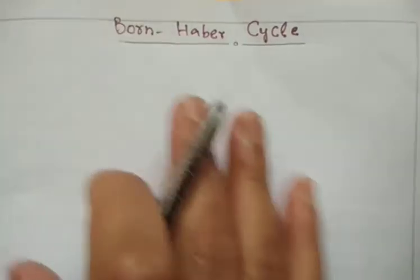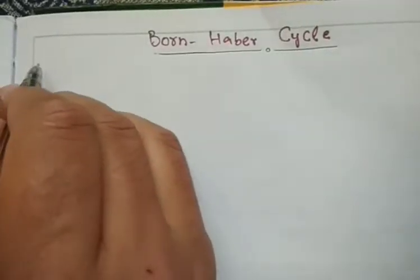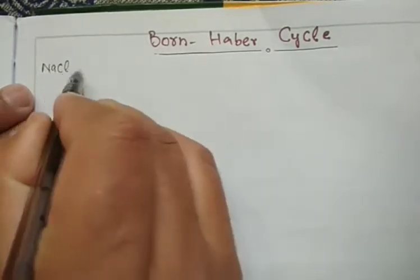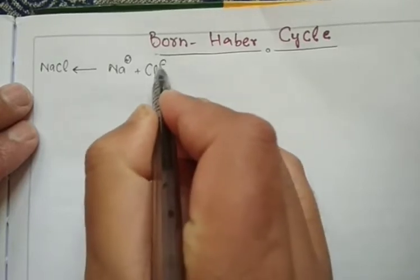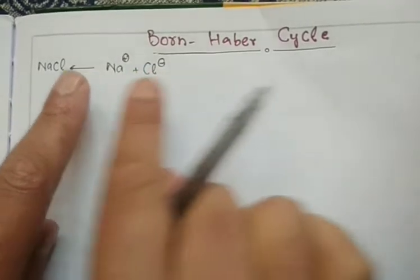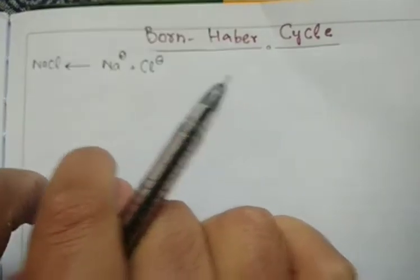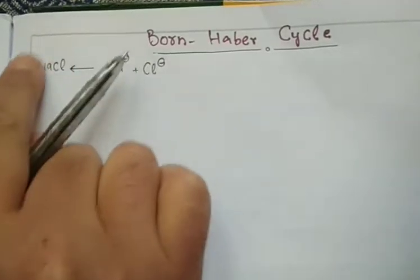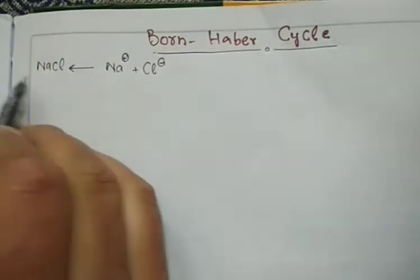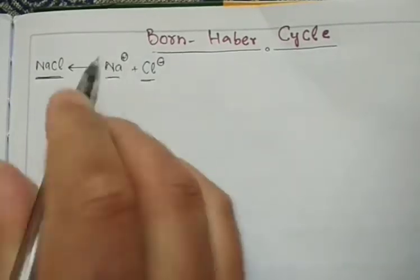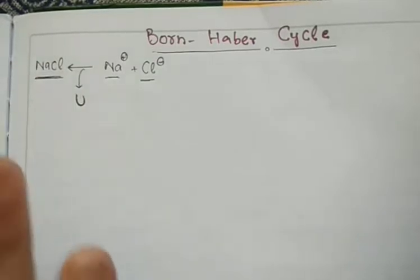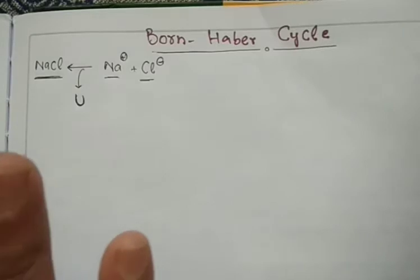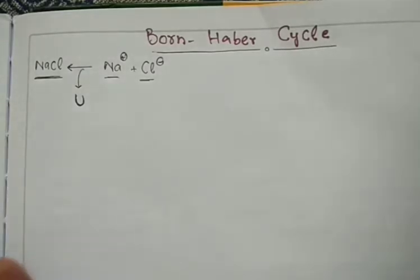So what actually is the Born-Haber Cycle? Last class we studied the formation of ionic substances or ionic compounds. We saw the example of the formation of sodium chloride from the cation sodium plus and the anion chloride. When the cation and anion come closer and form a bond, that is called the ionic bond, resulting in the formation of sodium chloride. When there is formation of one mole of this ionic compound from its constituent ions in the gas state, energy is released, and that energy is called the lattice energy. This was our last topic — please check our YouTube channel, Concise Chemistry, for the lattice energy topic.